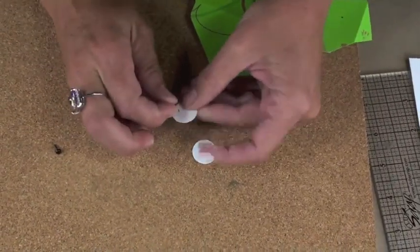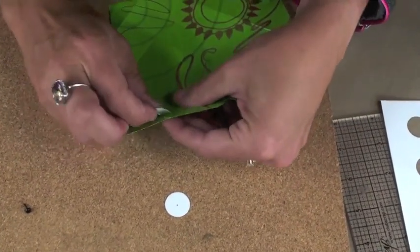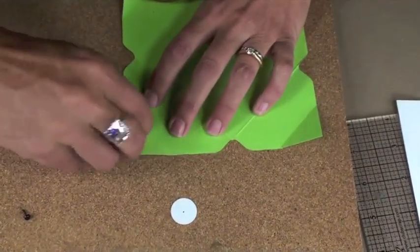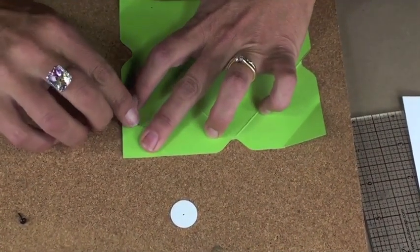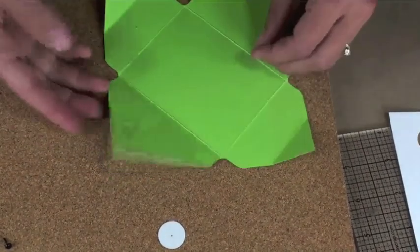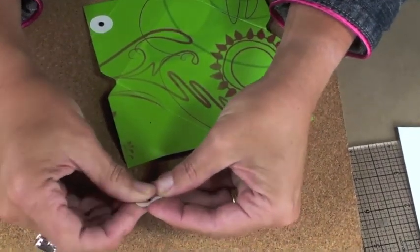Insert a mini brad right into that pre-pierced hole and then add the brad to the pierced hole on the top flap of the envelope. You want to make sure that the prongs of your brad extend parallel with the score line so that they don't interfere with the closing of that little pointy flap.